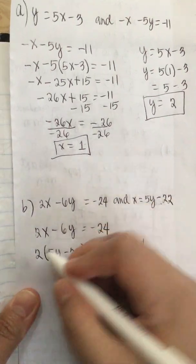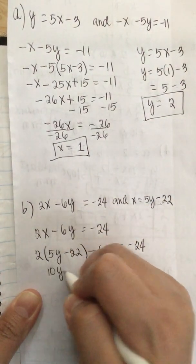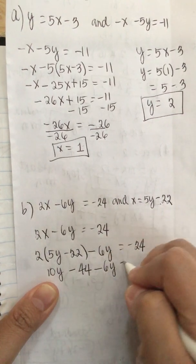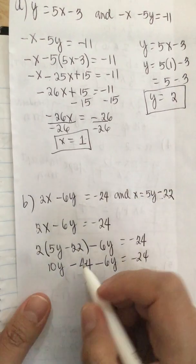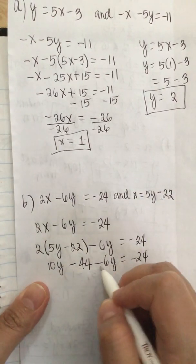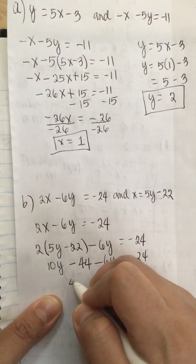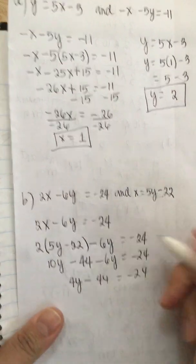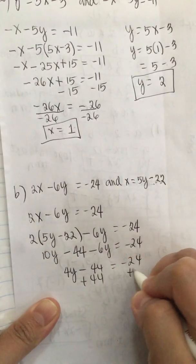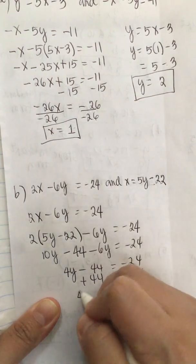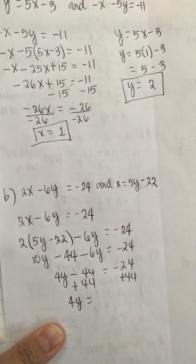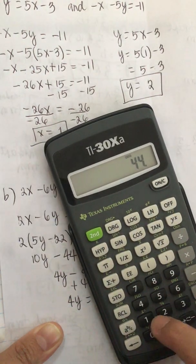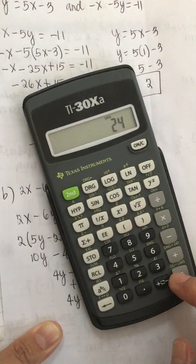We distribute to get 10y minus 44 minus 6y equals negative 24. Combining like terms, 10y minus 6y is 4y, so we have 4y minus 44 equals negative 24. Adding 44 to both sides gives us 4y equals 20.